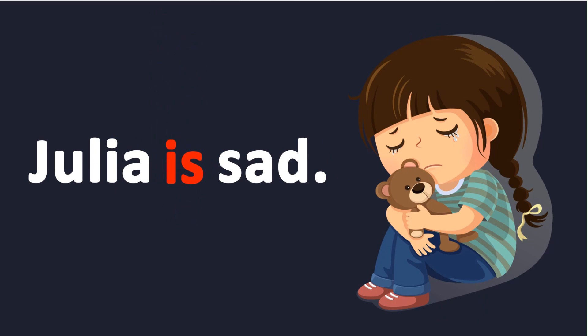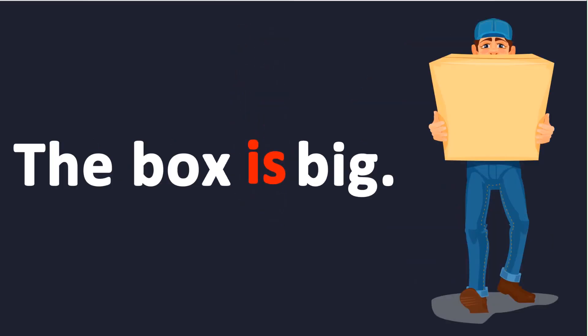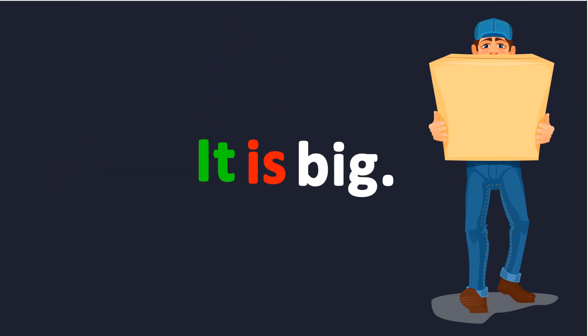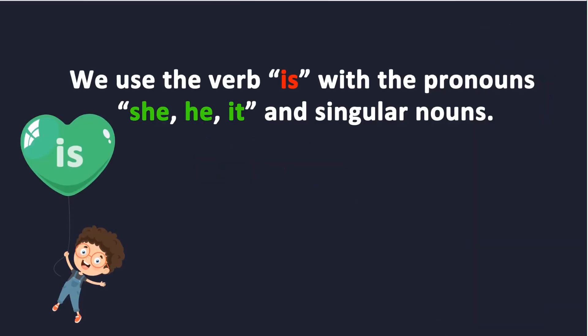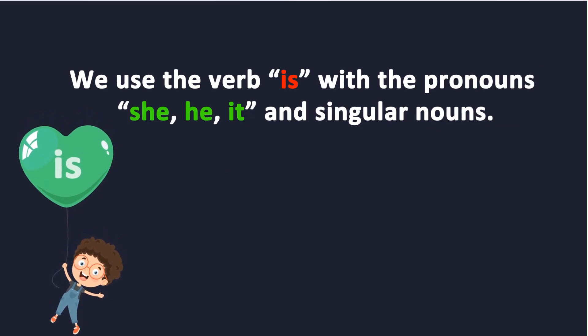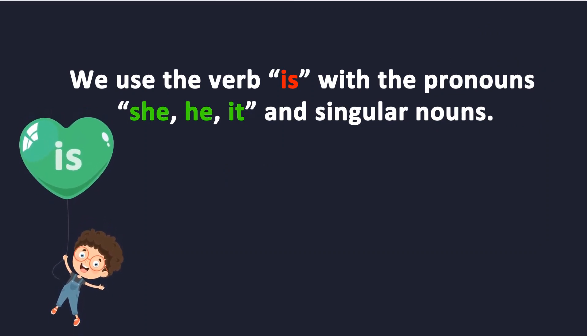Julia is sad. Julia is a girl. We can replace Julia with a pronoun. What is it? Good! We can replace Julia with she. She is sad. We use the verb is with the pronoun she. The box is big. Box is an object. The pronoun it can take the place of the word box. We can say it is big. We use the verb is with the pronouns she, he, and it.